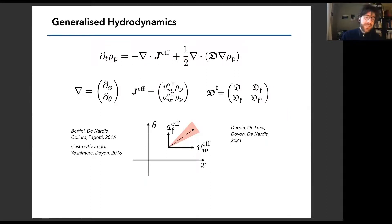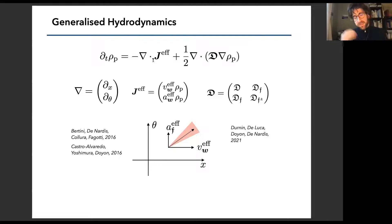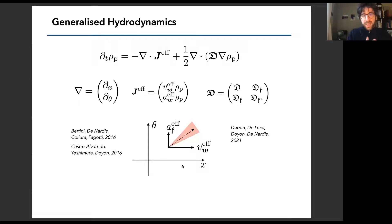GHD was invented almost five years ago. Recently it was extended to the most generic case, including external forces and non-homogeneous Hamiltonians. You can write it as a continuity equation for the quasi-particle density, because there is always an effective flux. The way they change, there is a flux and a spreading — and the spreading can be in any direction, both in x and theta. So you have, as Benjamin was saying on Monday, a two-dimensional fluid, with a continuity equation for the density in x and theta.